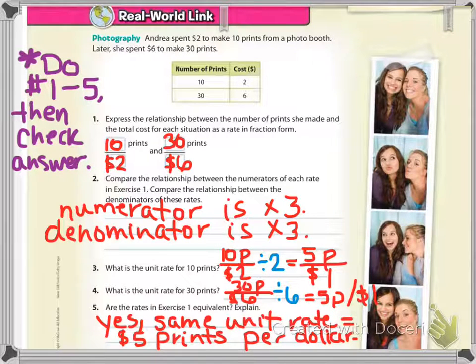And the last question, number 5, are they equivalent? Your answer is yes, and your explanation is basically in these words: the same unit rate is given, 5 prints for $5.